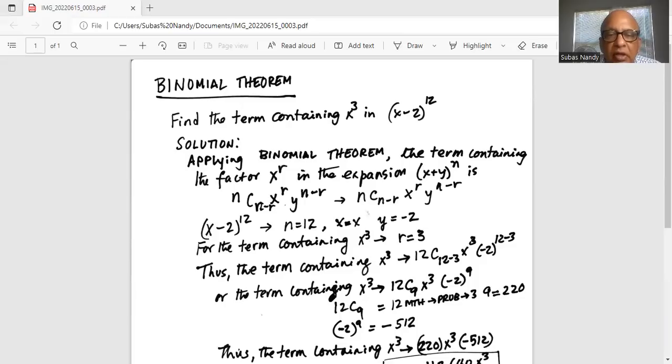Applying binomial theorem, the term containing the factor x^r in the expansion of (x+y)^n is nC(n-r), which is the combination of n things taken at (n-r) at a time, multiplied by x^r and y^(n-r).